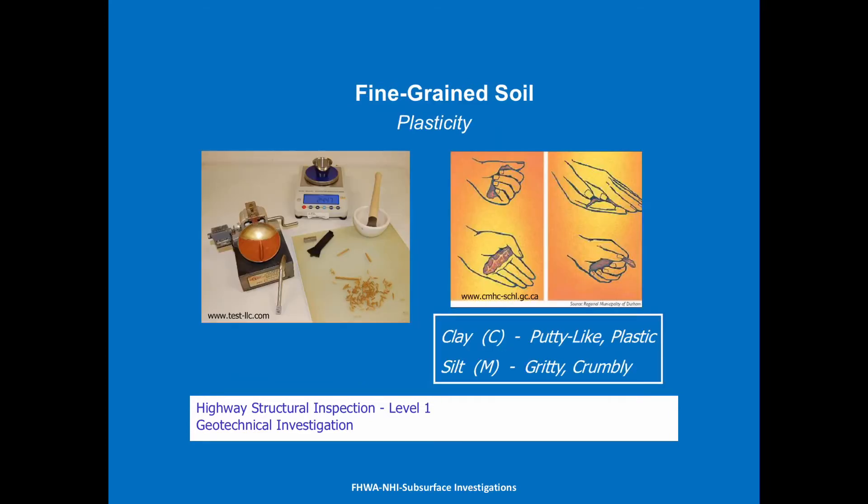To determine the difference between silt and clay: silts are more gritty, clays are more putty-like. We can run different tests — the Atterberg limits test, or just rolling the material in our hands to determine whether we have a clay or a silt. There are also lab tests to determine actual percentages using a hydrometer and such.